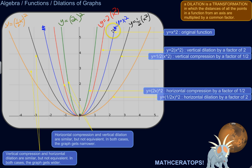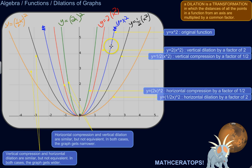I've shown both the equation and how it's modified in order to do the dilation or compression, and then what it looks like. Let's look at the vertical dilations and compressions first. So let's look at this red one: y equals 2 times x squared. That's a vertical dilation by a factor of 2.